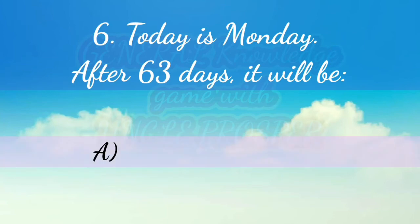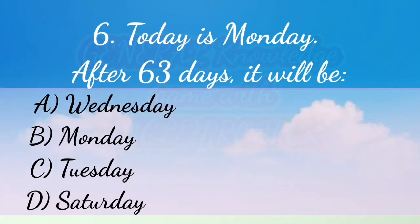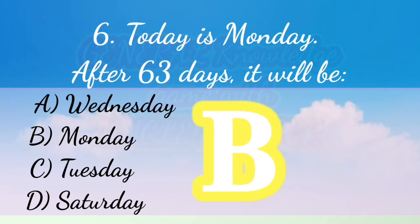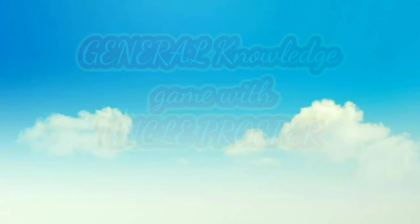Question six: Today is Monday. After 63 days, what day will it be? You should know that after every seven days, the next Monday falls on the 8th day. With 63 days, the 64th day is what we check. Dividing 63 by 7 gives exactly 9 weeks, so the 64th day will be Monday again, because every 8th day always gives us Monday.